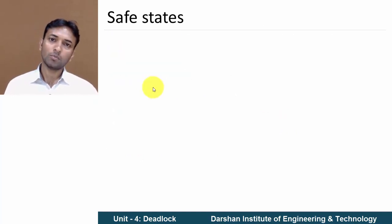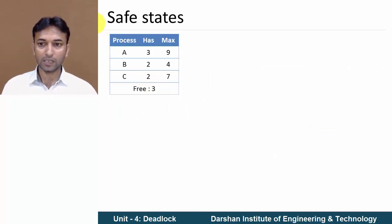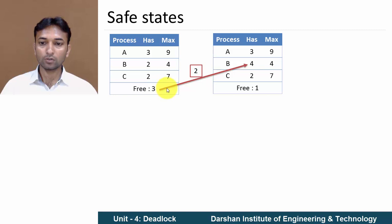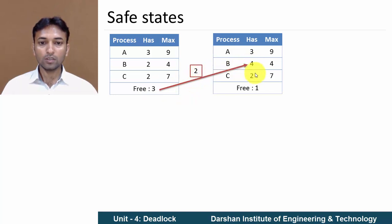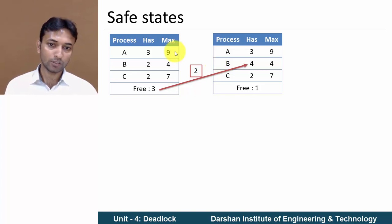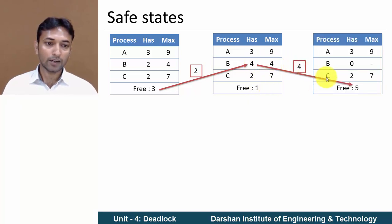Now let us execute each process in a particular order. Initially, process A requires 6 resources — not available. B requires 2 resources — that is available. So 2 resources are allocated to process B, giving it 4 total. Process B completes its execution. Once B finishes, all 4 resources are freed and added back to free resources, making free resources 5.